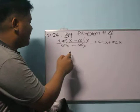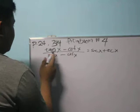I'm going to prove that (tan x - cot x) / (sin x - cos x) equals sec x + csc x. By definition,